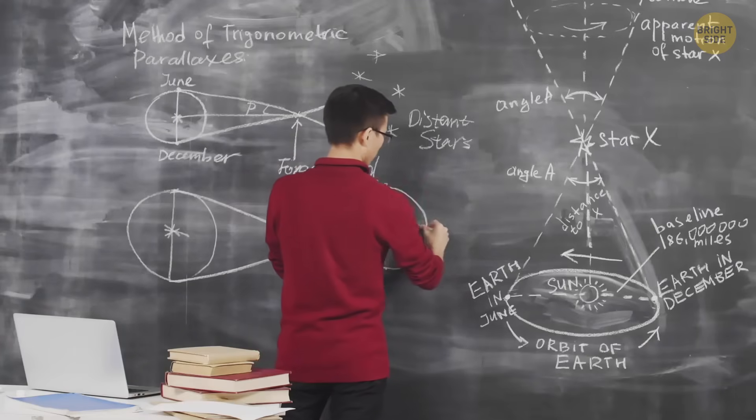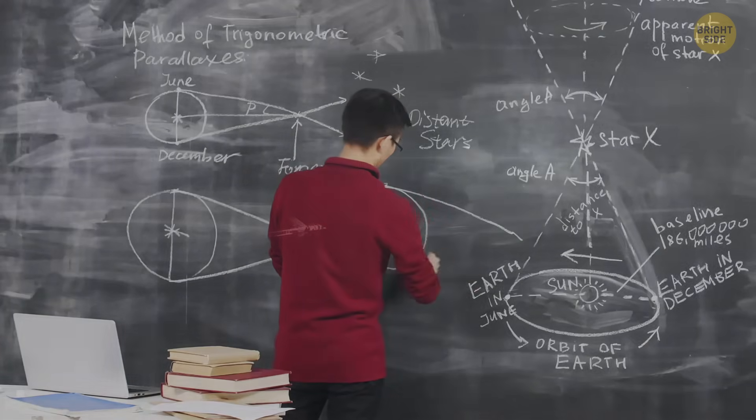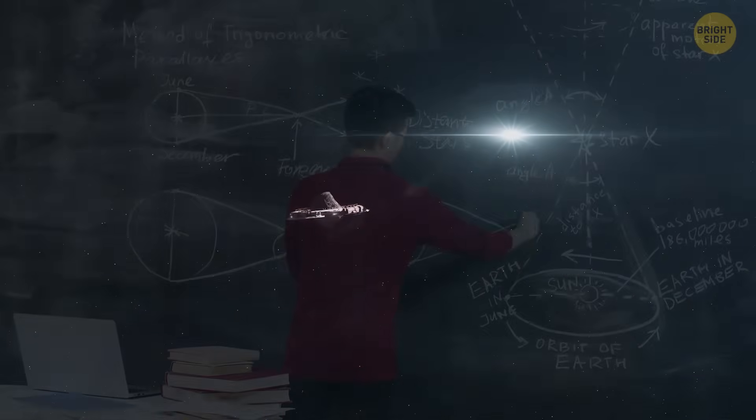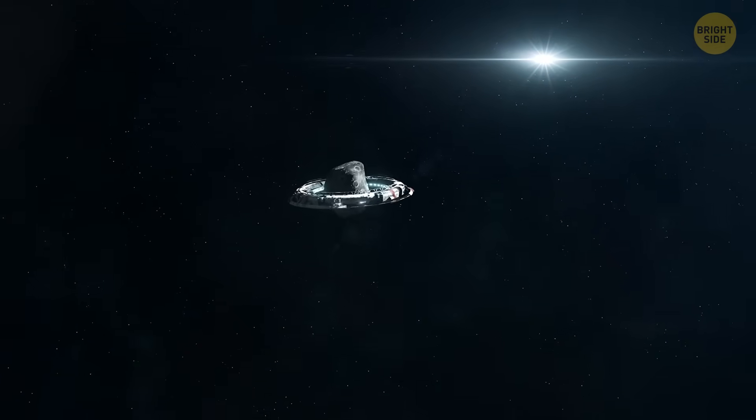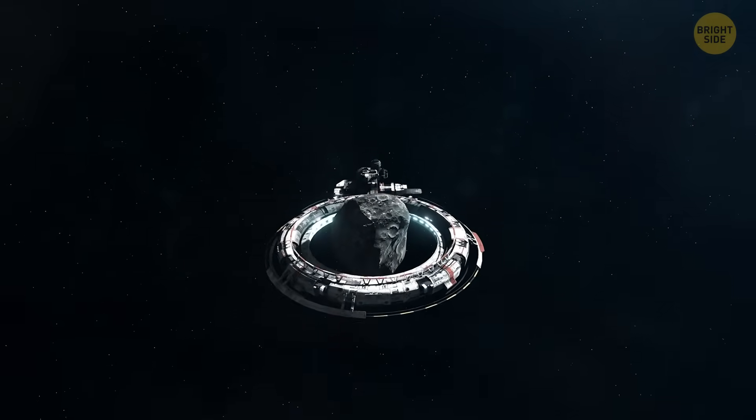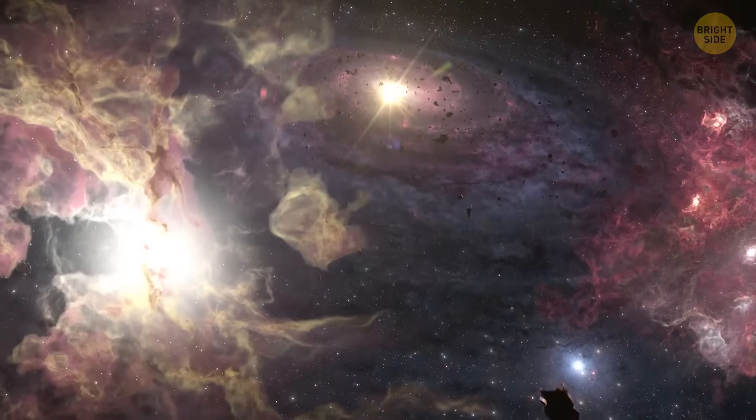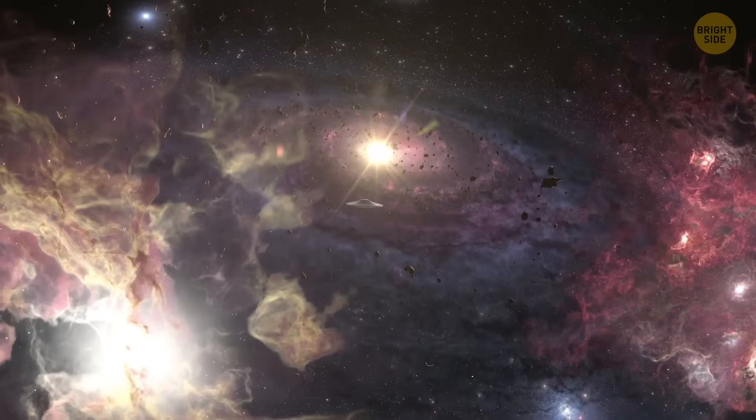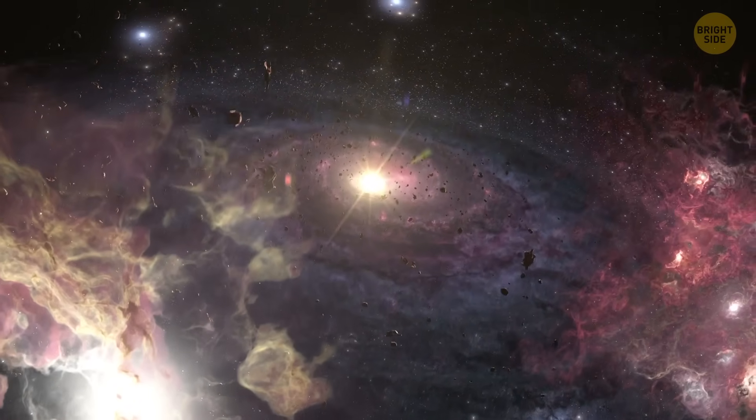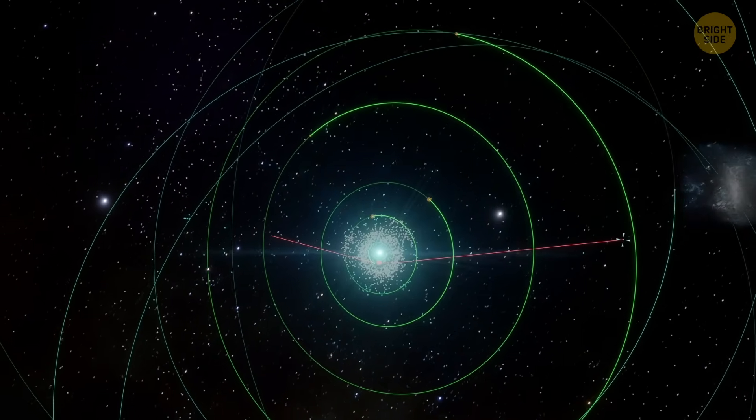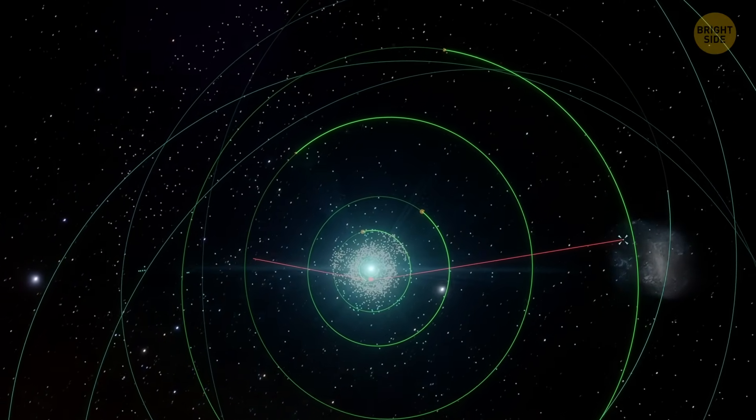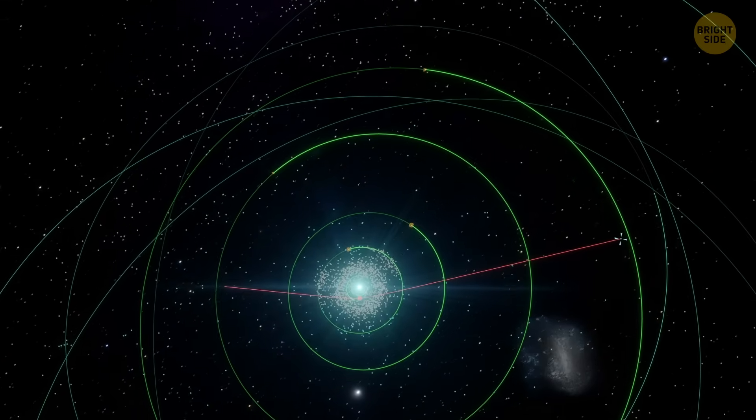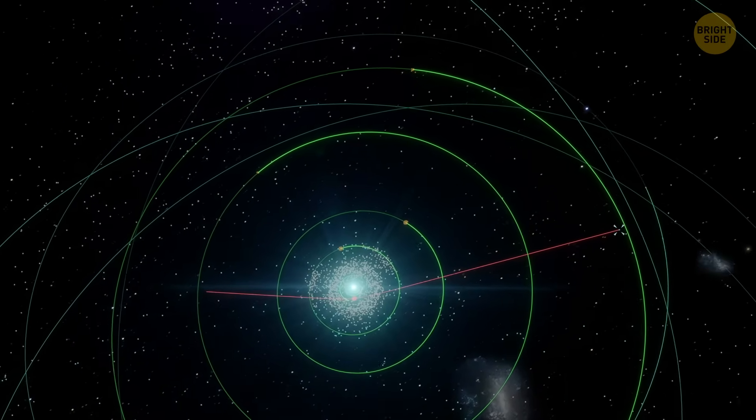These odd behaviors have led some researchers to consider a pretty unexpected idea. 3I Atlas might be a probe sent by another civilization, possibly to study Earth. According to this theory, the object could be a sign of some kind of intelligence from beyond our solar system. Why do they think this? Well, because the object's movement doesn't match what you'd expect from something controlled only by gravity.